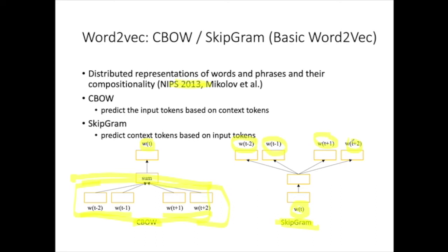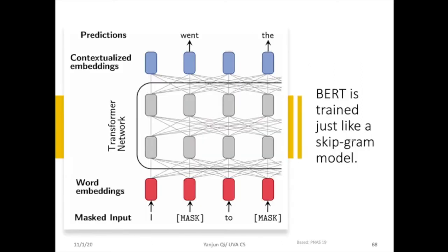Using the skip-gram loss over every possible word in the unsupervised data generates a lot of pseudo signals. That's how word2vec constructs positive and negative samples for training. BERT essentially borrows these word2vec-type loss formulation ideas but replaces the basic architecture blocks with self-attention transformer blocks.